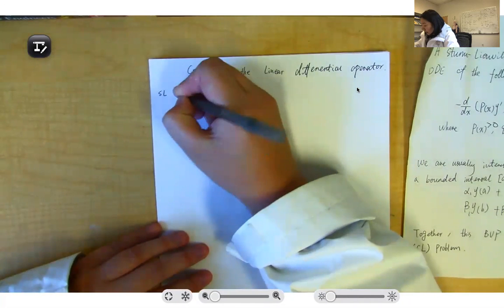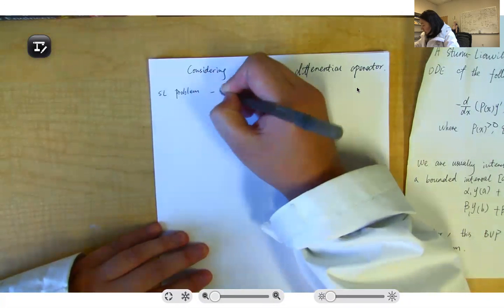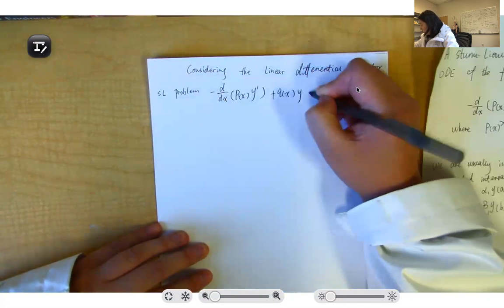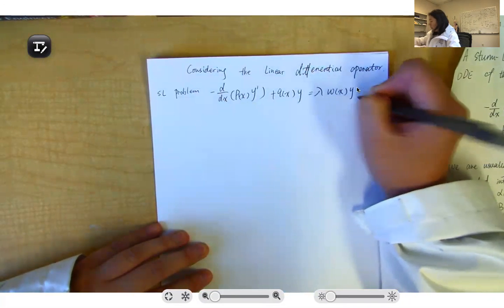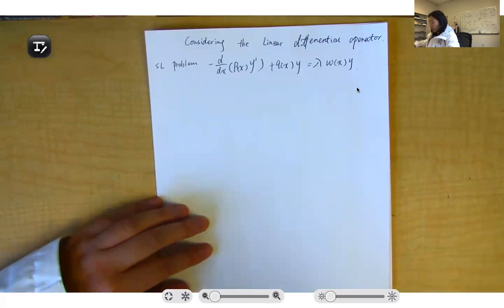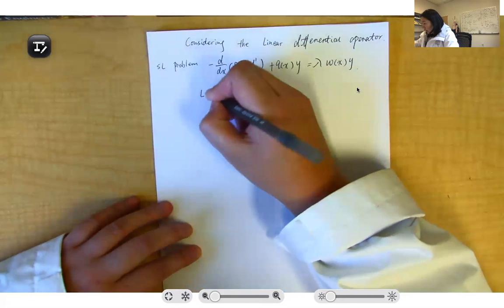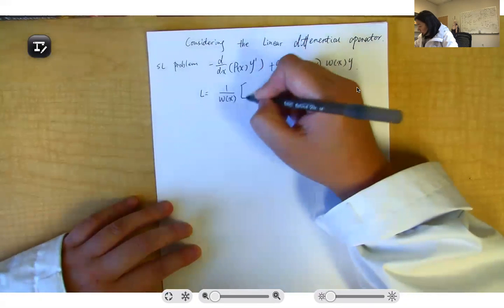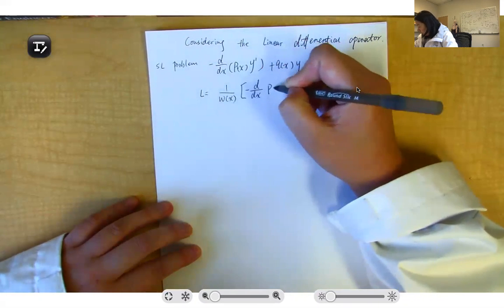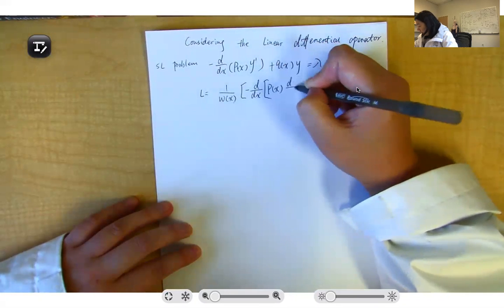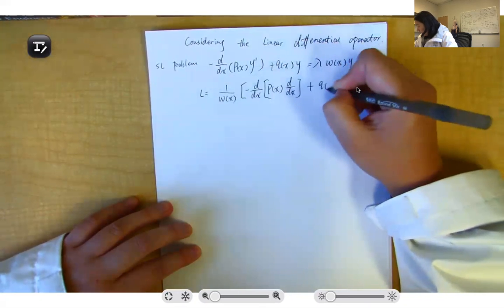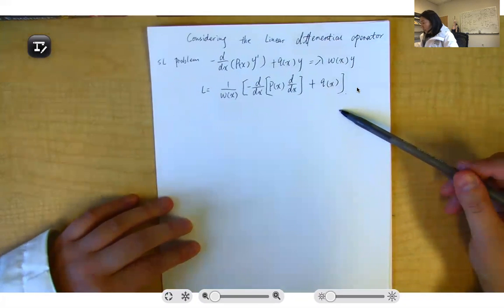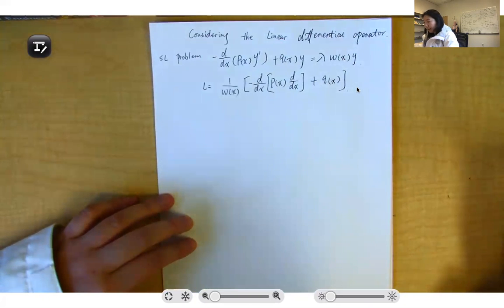Let's write an operator — a linear operator — based on this format. The SL problem looks like minus d/dx of p(x)y' plus q(x)y equals lambda omega(x)y. Then the linear operator L is defined as one over omega(x) times negative d/dx of p(x) d/dx plus q(x).